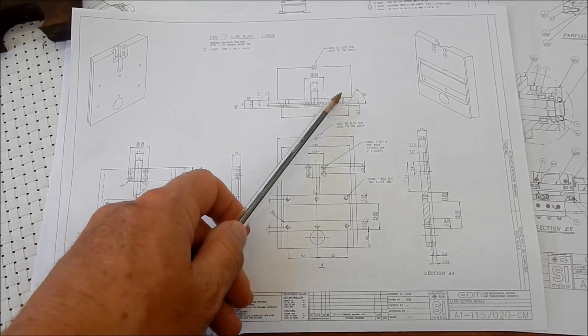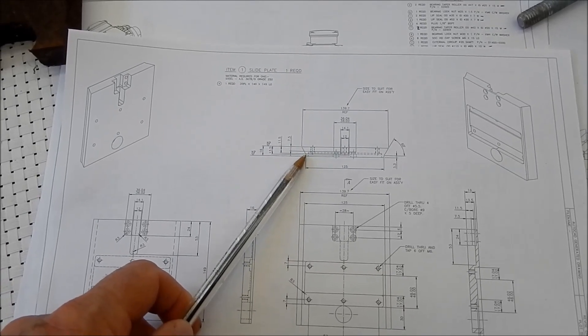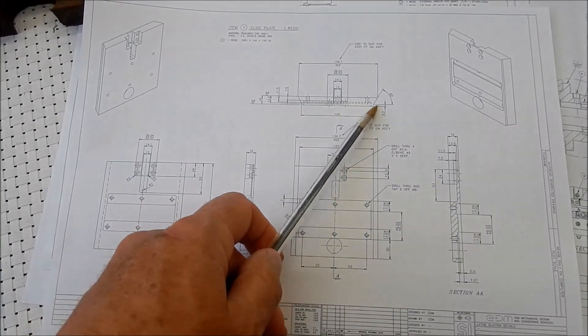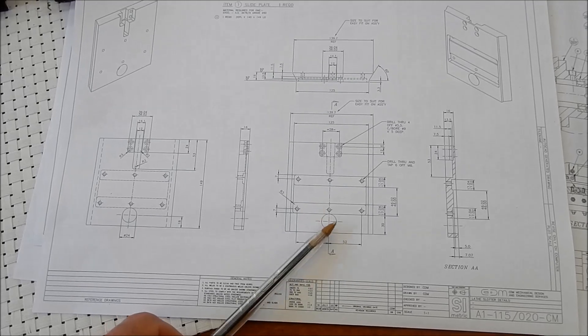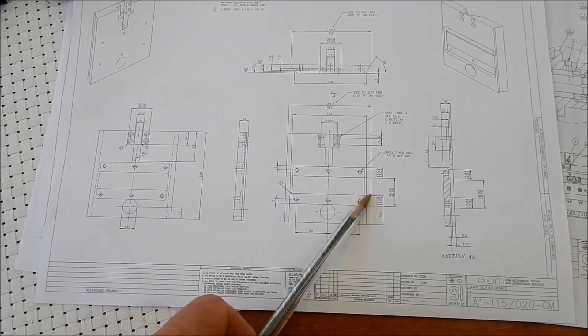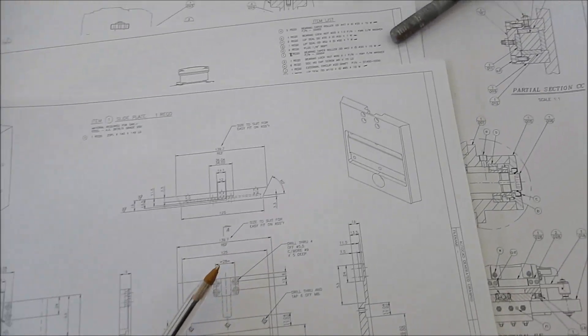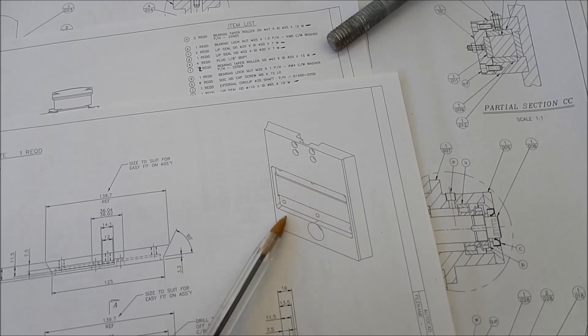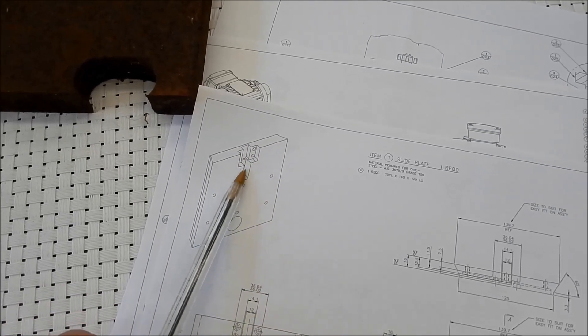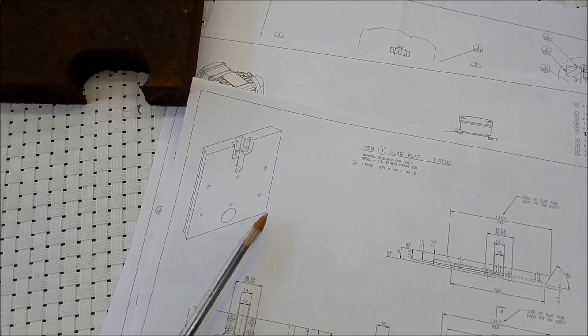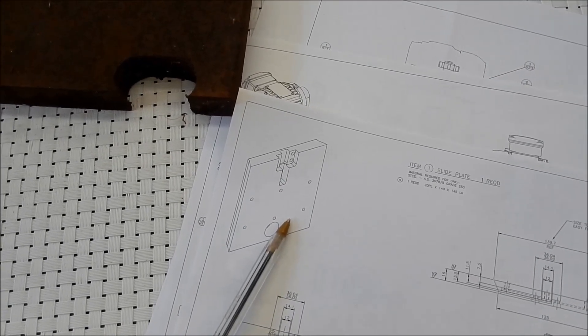We've got our dovetails that we need to machine in. I haven't done myself any favors here - I haven't washed those all the way through. We've got a step that we need to come up to. I wanted the maximum amount of meat that I could on that face to be able to mount the slideways for the square round that's going to go into place.